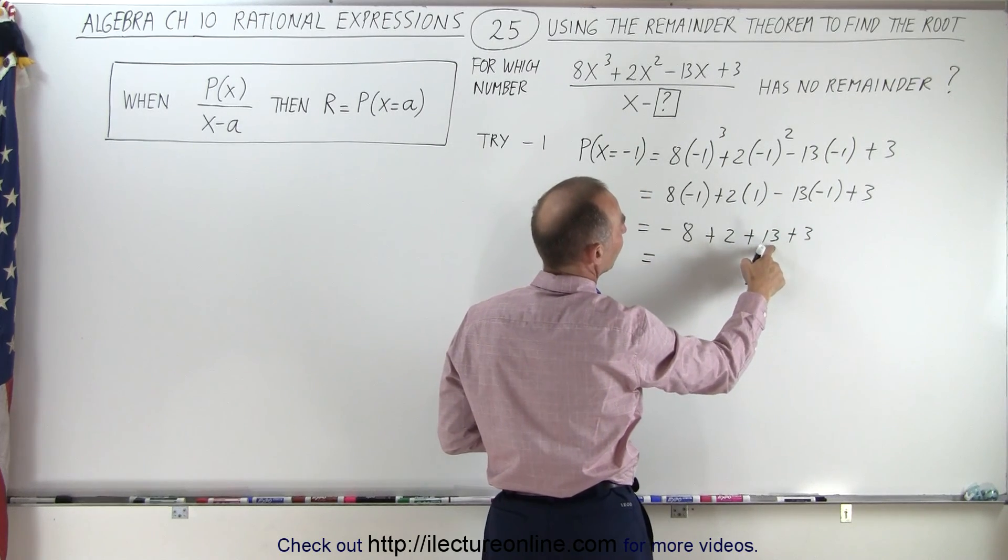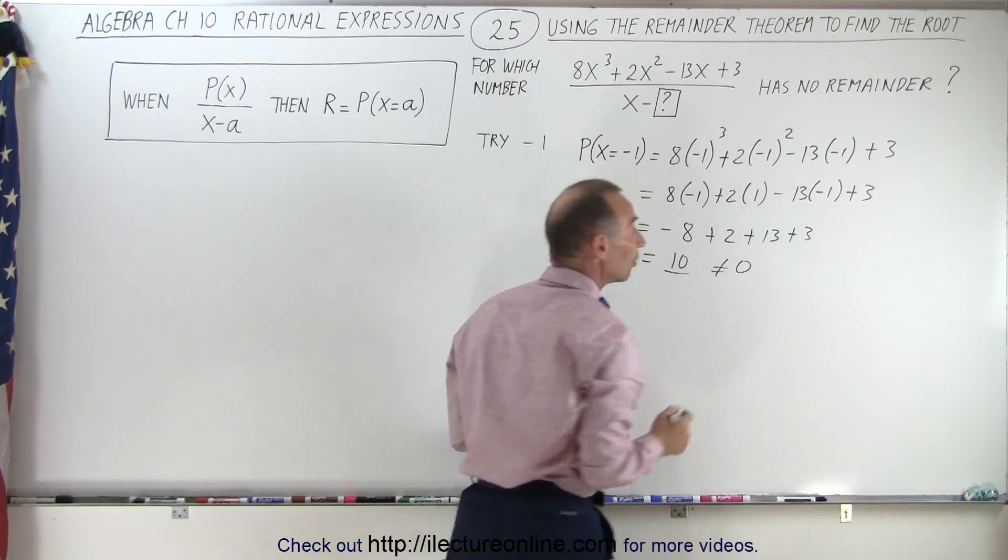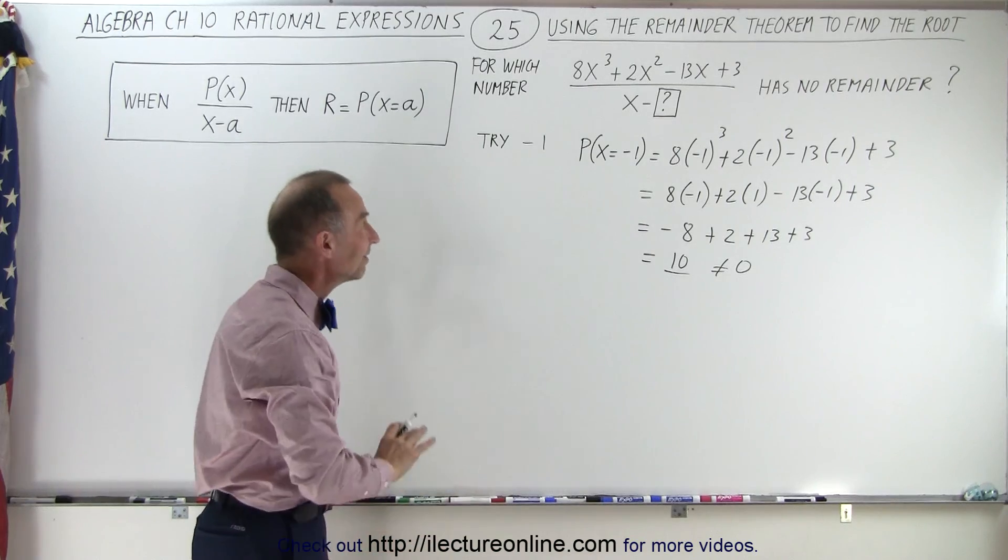Which means that this is negative 8 plus 2 plus 13 plus 3. And if we add all that together, that's 16, that's 18 minus 8 which is a positive 10 which is therefore not equal to 0 which means negative 1 is not a root.